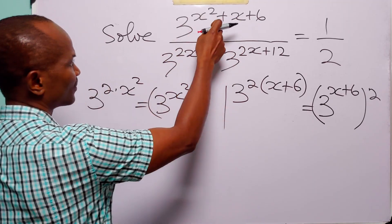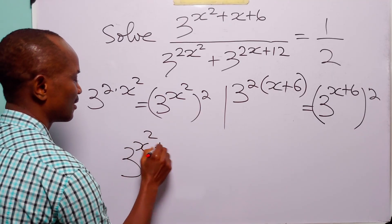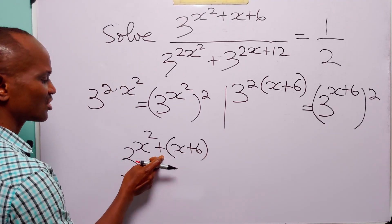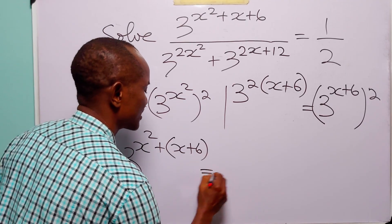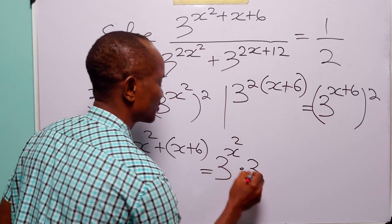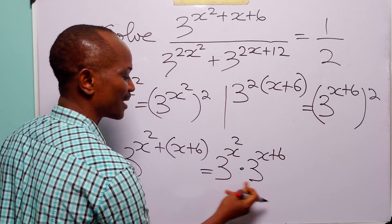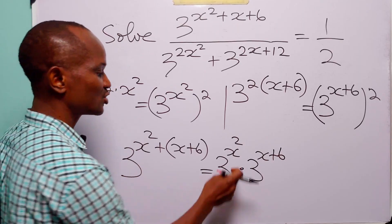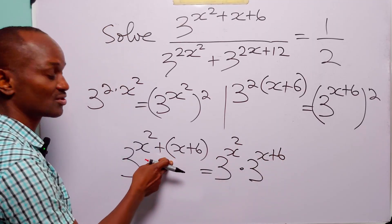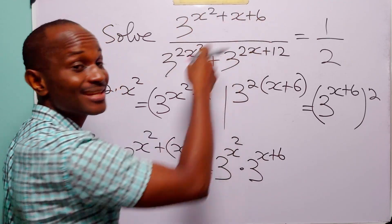Now let us look at this numerator. We can write this as 3 to the power x squared plus x plus 6. Because of this addition, we can write this as 3 to the power x squared multiplied by 3 to the power x plus 6. Because remember that when we multiply two powers with the same base, all we do is add the exponents. And x squared plus x plus 6 gives us exactly this. So by writing this in this form, we haven't changed anything in the numerator.